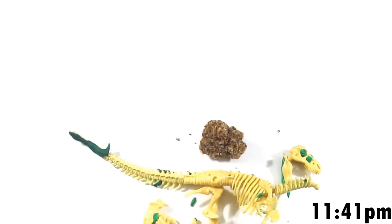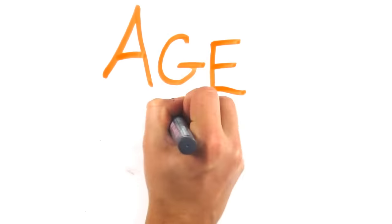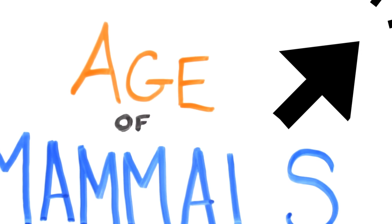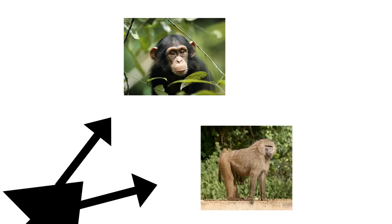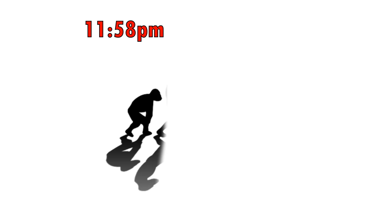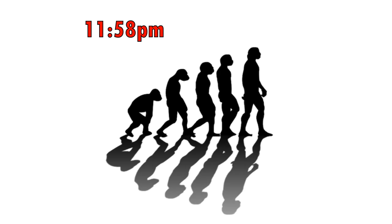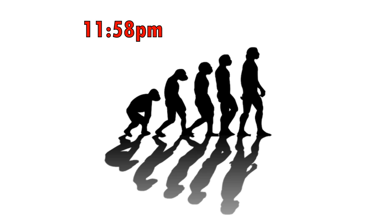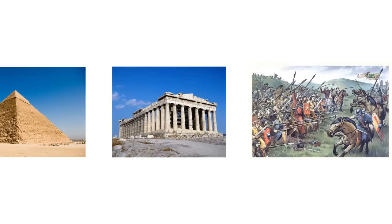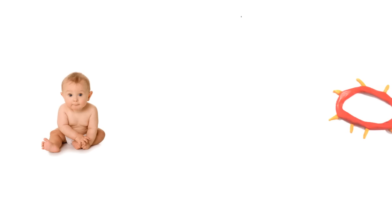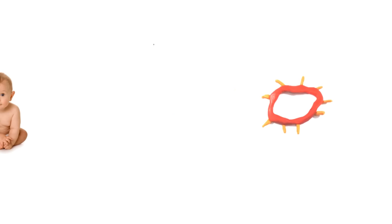And so begins the age of mammals. In the last few minutes, apes split from the old world monkeys, and with only one minute and 17 seconds left before midnight, humans emerge. All of the recorded human history fits within a few seconds, an individual life lasting barely an instant — all a culmination of 3.8 billion years of life.